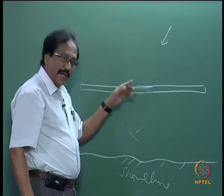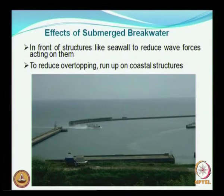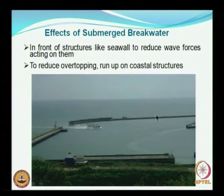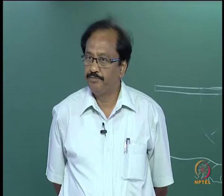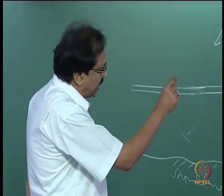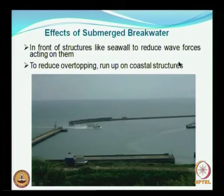This breakwater can either be submerged or emerging type. It is a long breakwater serving as an attenuator — it will not allow the wave energy to propagate. This type of breakwater is also widely used as a tsunami barrier, particularly in protecting power plants. When there is a gap, we call this a harbor; the purpose of this breakwater is for harbor protection.